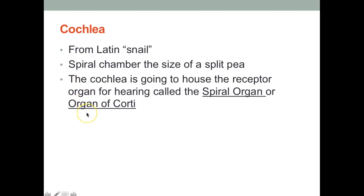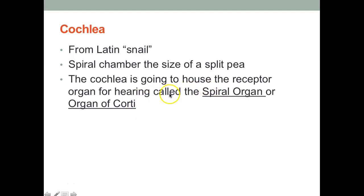The cochlea — from Latin meaning 'snail' — does look like a snail. It's very small, about the size of a split pea. The cochlea houses the receptor organ for hearing called the spiral organ or organ of Corti. The receptor organ for hearing is called the organ of Corti — I prefer that term over 'spiral organ of Corti.'